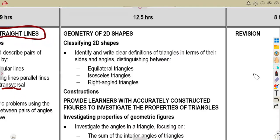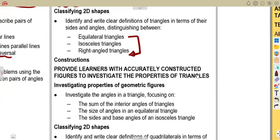The last part you are going to have is the geometry of 2D shapes, where you need to classify 2D shapes. Identify and write clear definitions of triangles in terms of their sides and angles, then distinguish between equilateral triangles, isosceles triangles, and also right-angled triangles.